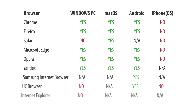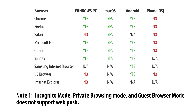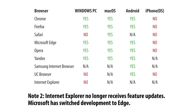Philcoce uses OneSignal for push notifications, which supports a number of browsers indicated in the following page. Note that incognito mode, private browsing mode, and guest browser mode do not support web push notifications, and that Microsoft users must switch to the Edge browser, as Internet Explorer no longer receives feature updates.